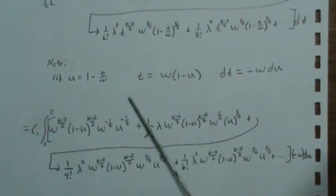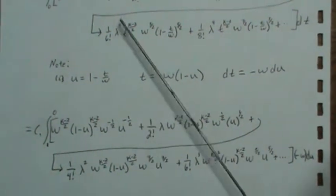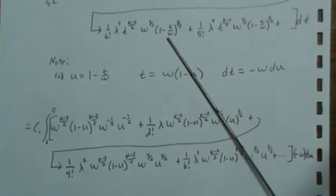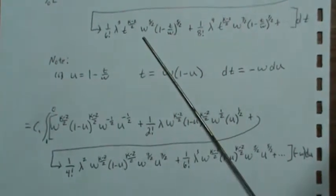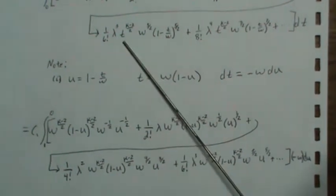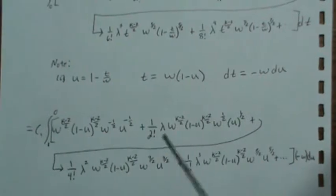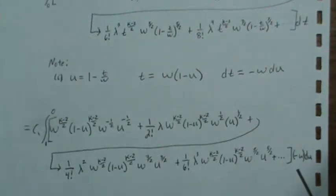So I plug in a U wherever there was a 1 minus T and then this W goes away. This T is then W minus U and so anyway I get this.